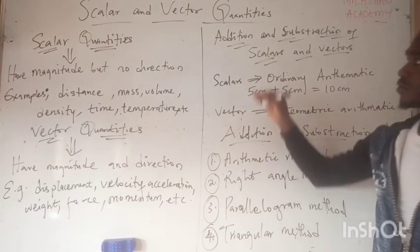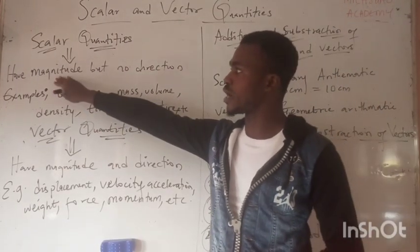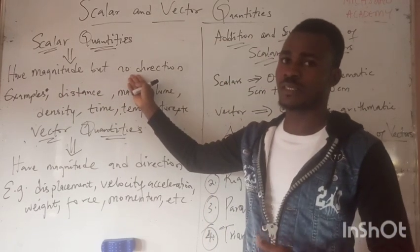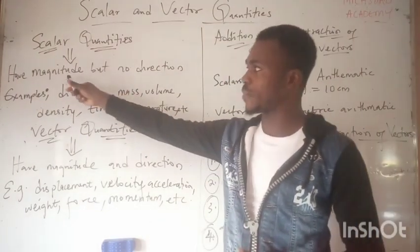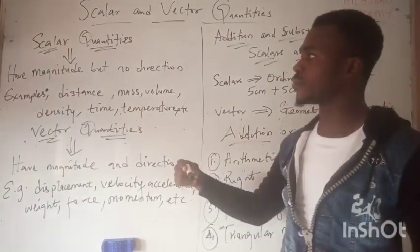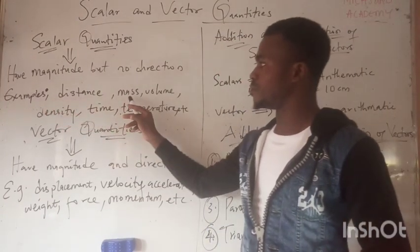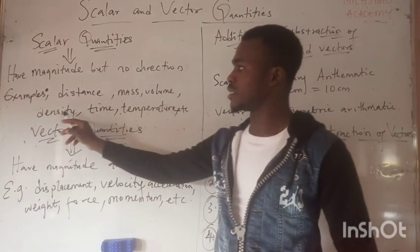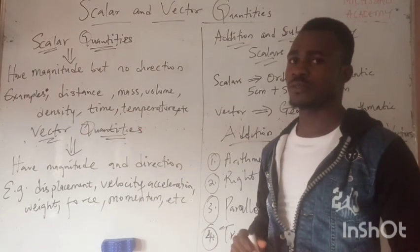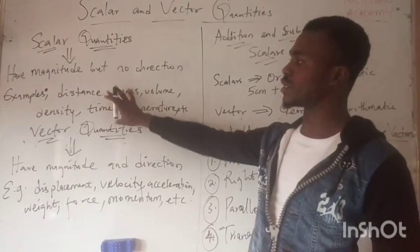Scalar quantities are those quantities that have magnitude but do not have direction. Examples of scalar quantities include distance, mass, volume, density, time, temperature, and so on.